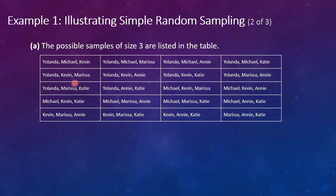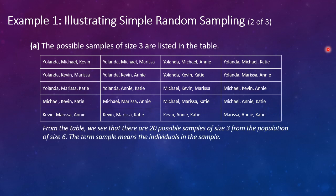So again, if we look at all the possible samples of size three, and again this is what I was talking about: go Yolanda, Michael, Kevin; Yolanda, Michael, Marissa, etc. And then go to the next person: Yolanda, Kevin, Marissa; Yolanda, Kevin, Annie; Yolanda, Kevin, Katie. Okay, you run all those out because you've done it, and then keep moving on. This is a little bit challenging and there are ways to figure out how many different groupings there are. But we can see here that we've created 20 different possible samples of size three.